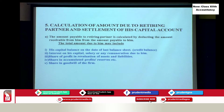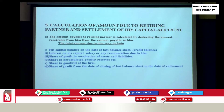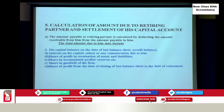Then his share of goodwill — gaining partners are to be debited and the retiring partner is to be credited in the gain ratio. The journal entry is passed in the gain ratio, so the retiring partner is credited with his share of goodwill. And his share of profit — this is something different. If the partner retires in the middle of the year, he is supposed to get his share of profit in the firm's profit up to the date of retirement, calculated from the last balance sheet till the date of retirement.